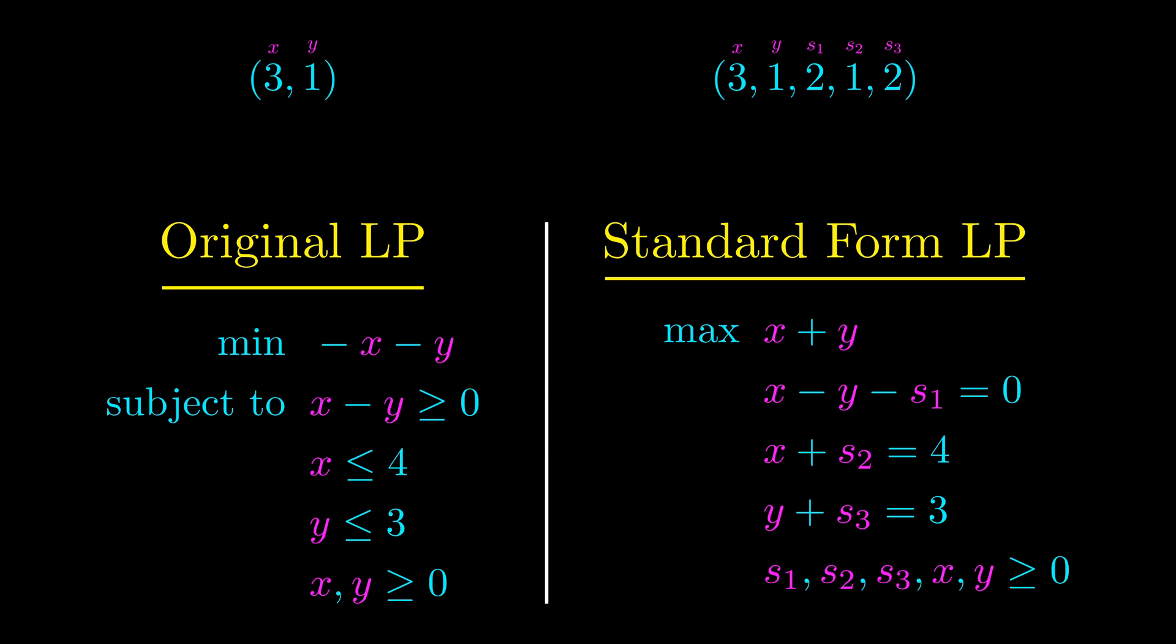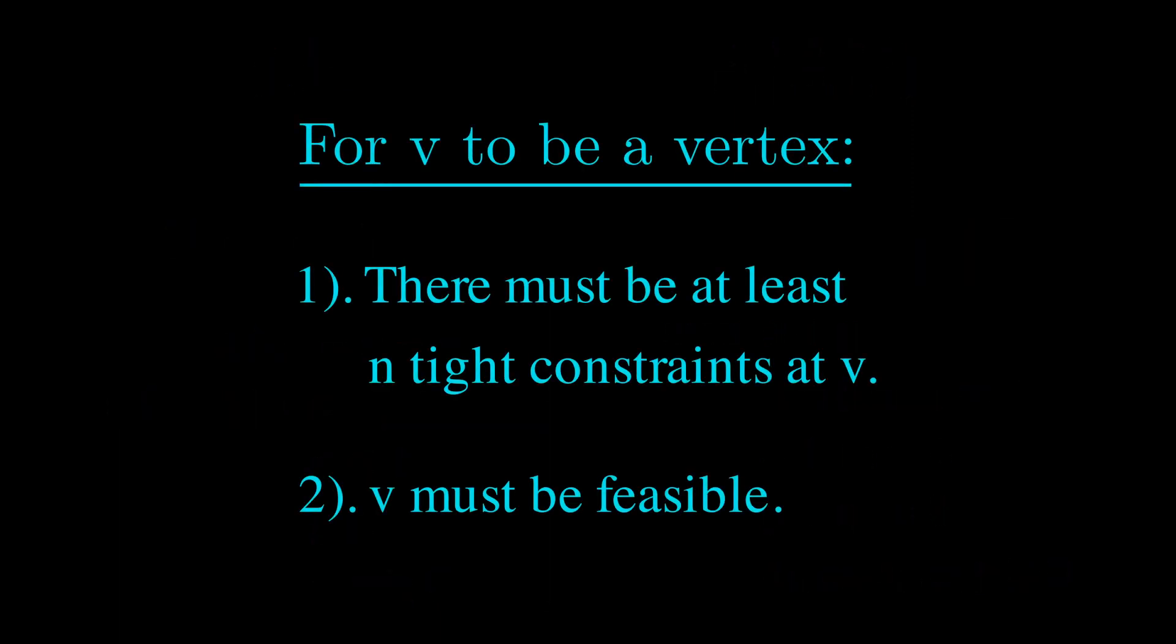This new problem now has 5 decision variables and 8 constraints, so it seems like we just made our problem much more complicated. But actually, it greatly simplifies our characterization of the vertices.